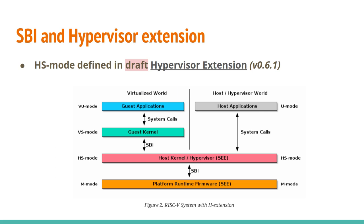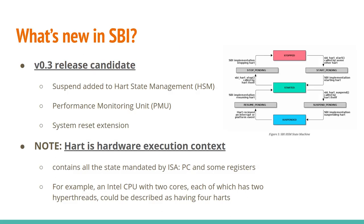SBI also works with the hypervisor extension, which is currently in draft. There's an additional HS mode, so we have the guest kernel making SBI calls to the hypervisor in HS mode, which then makes SBI calls down to machine mode. SBI does have continuing releases — the current release candidate is version 0.3, which adds suspend functionality to the hart state management, a performance monitoring unit function, and the system reset extension so it can fully reboot the system.